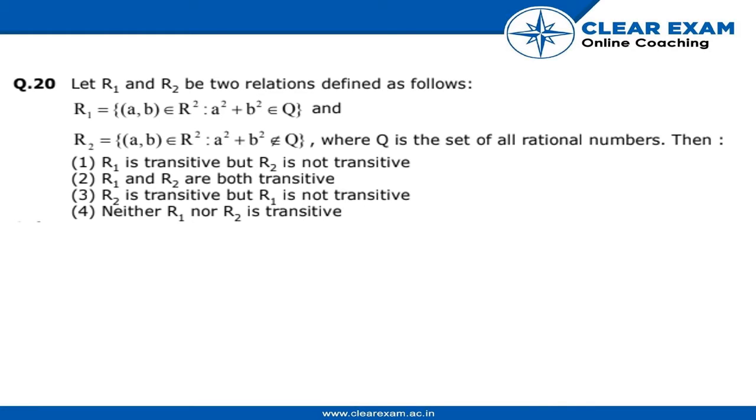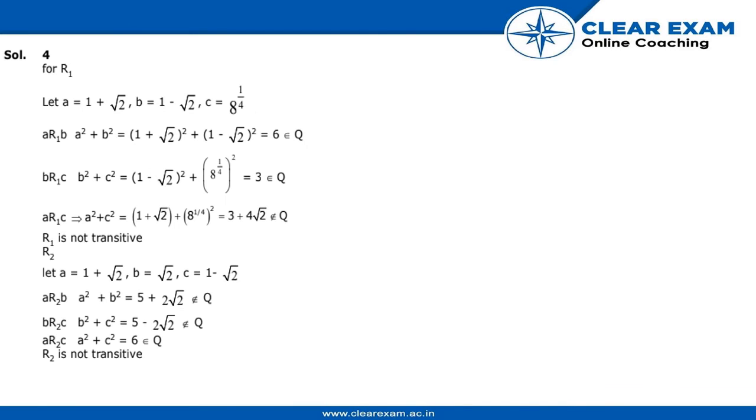Then which one is true? First, R1 is transitive but R2 is not transitive. Second, R1 and R2 both are transitive. Third, R2 is transitive but R1 is not transitive. Fourth, neither R1 nor R2 is transitive. First of all, we would simplify the situation for R1.